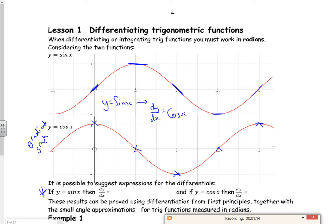becomes the cos graph, which is down here. So it says it's possible to suggest expressions. So if y equals sine x, dy by dx equals cos x. If I do it again, if I look at the gradients of the cos graph and graph it, I get minus sine x.